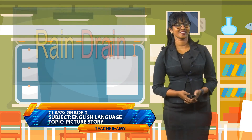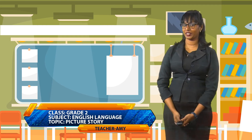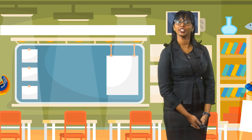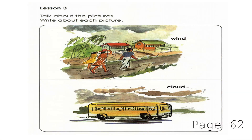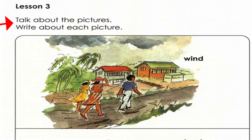Now we are going to turn to page 62. When you're on page 62, you should see these pictures. On page 62, it says Lesson 3. Then it says, talk about the pictures and write about each picture.